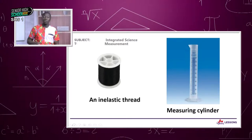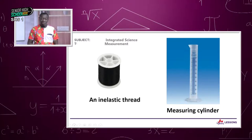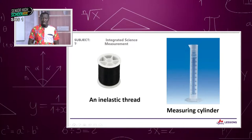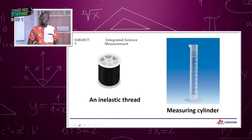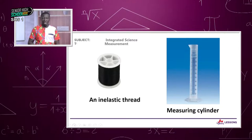Make sure the water you put in will be enough to cover the solid object. After tying the object, gently lower it down into the water in the measuring cylinder. Don't use aggression — if you dump it in, water might splash and your volumes won't be accurate. Observe these precautions.